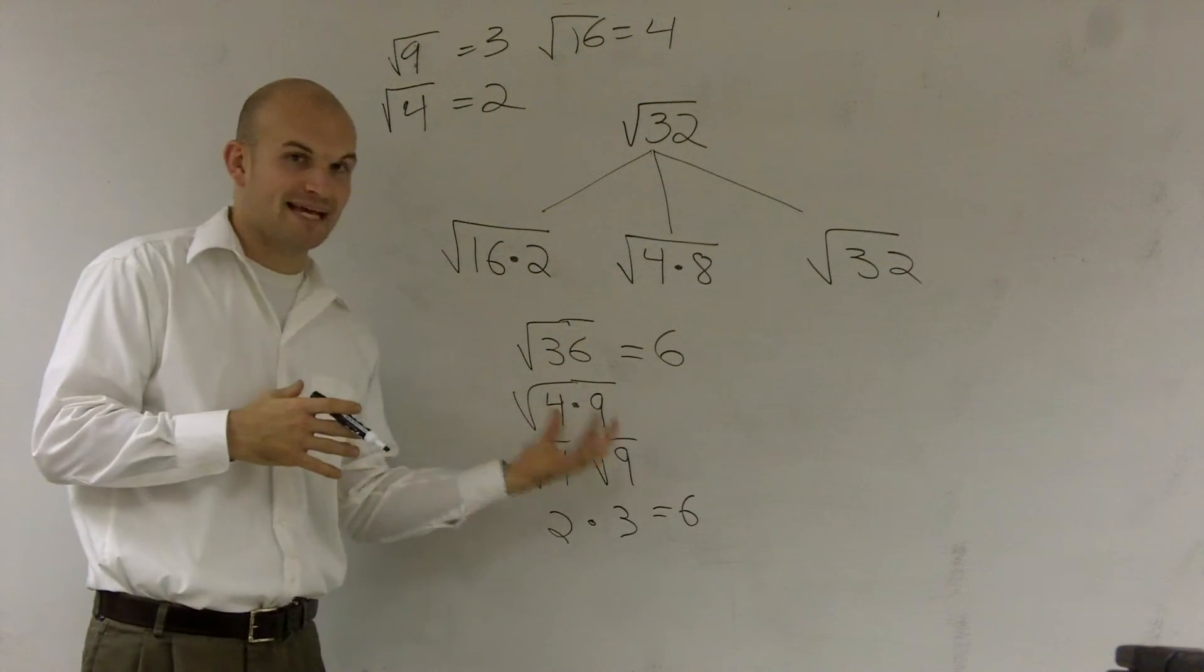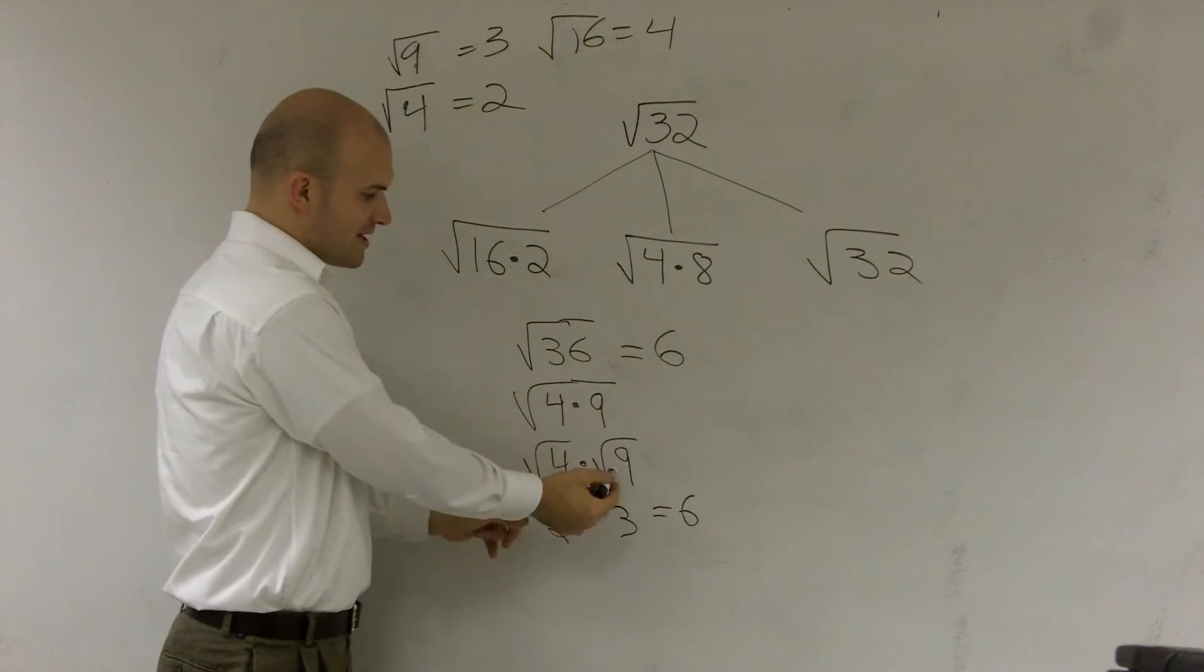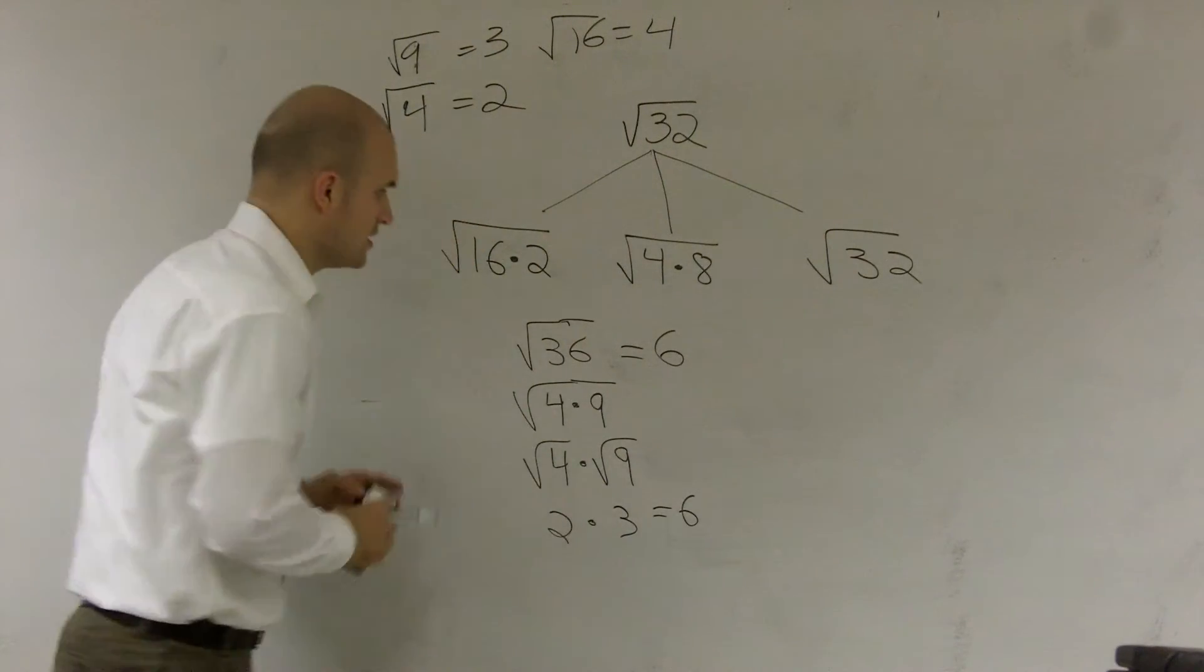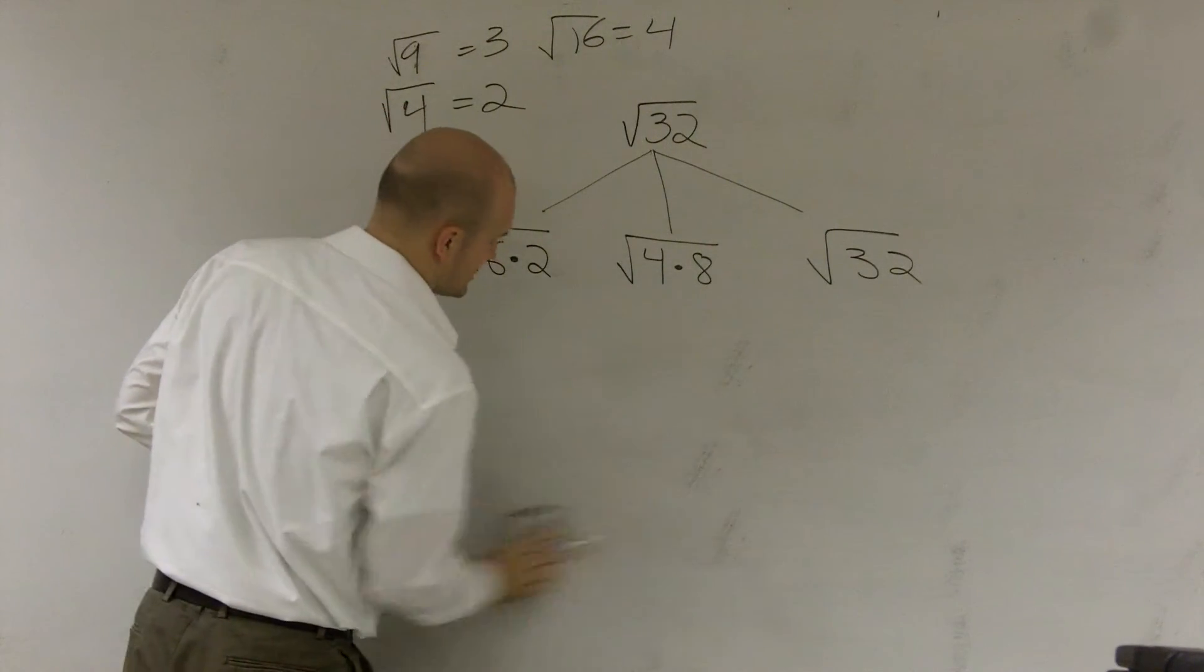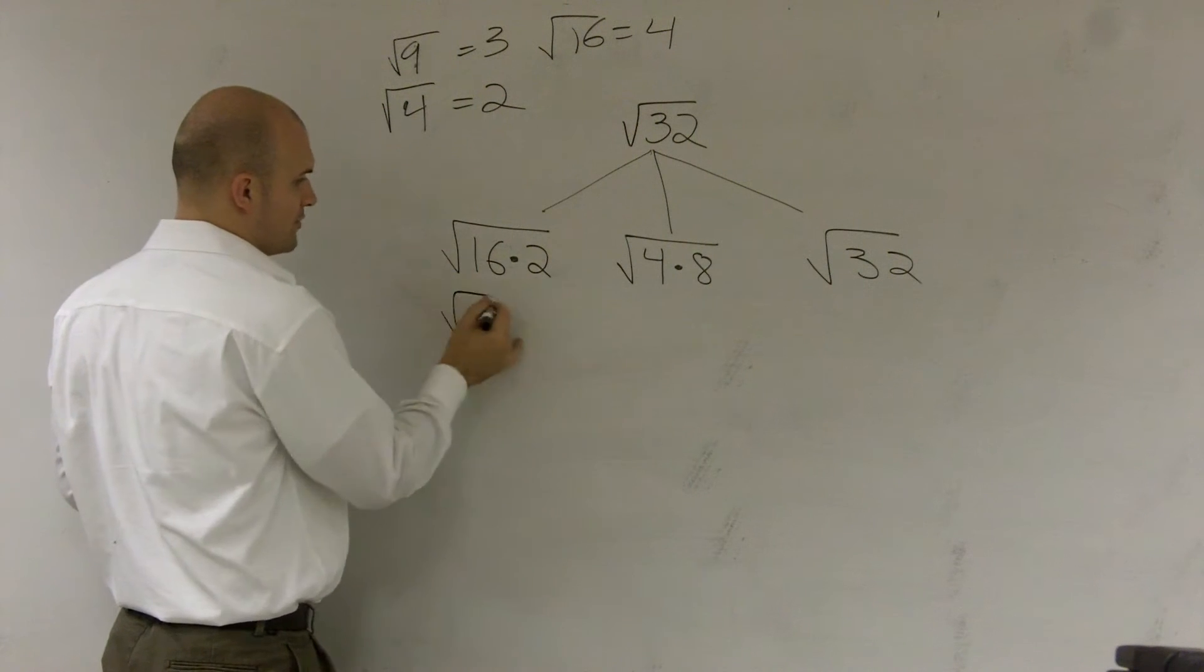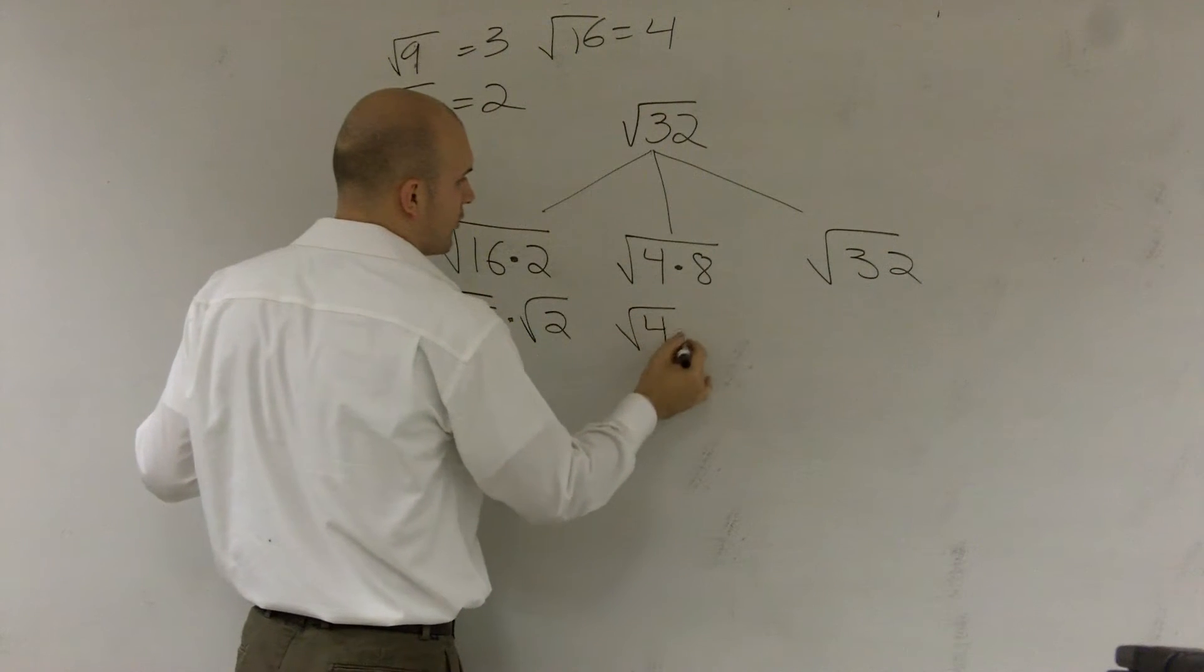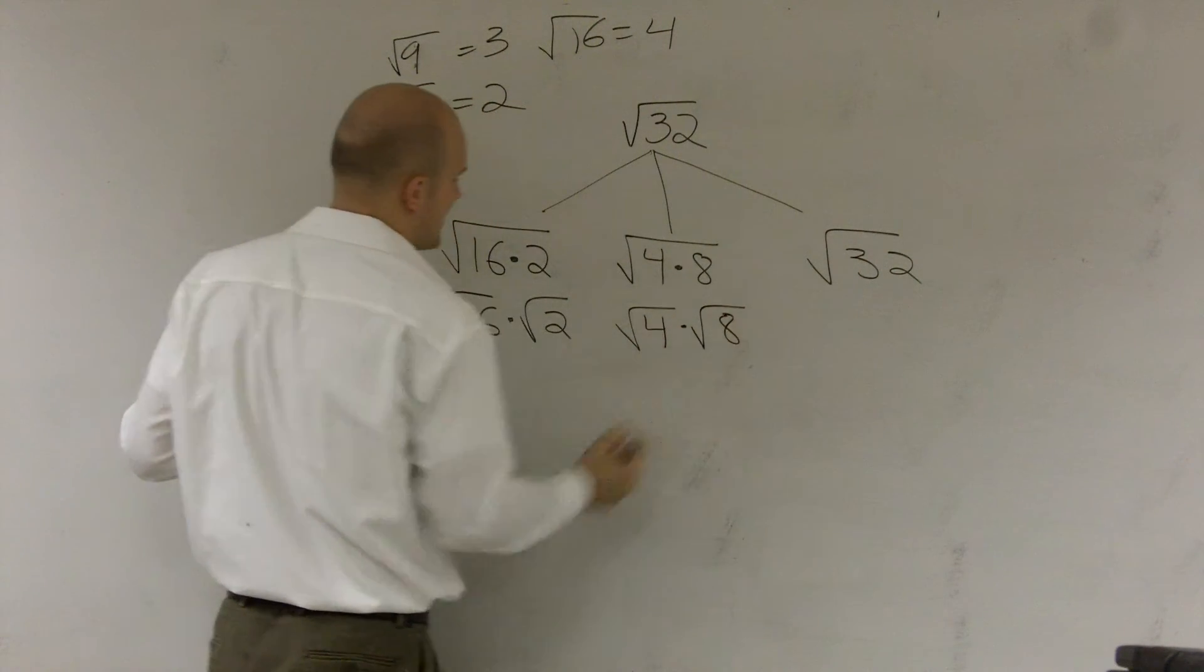So therefore, if you have a multiplication inside a radical, you can break that up into two separate radicals. And they're still going to be true. So that's what I'm going to want to do with these. I'm going to break this up into the square root of 16 times the square root of 2. This will break up into the square root of 4 times the square root of 8.